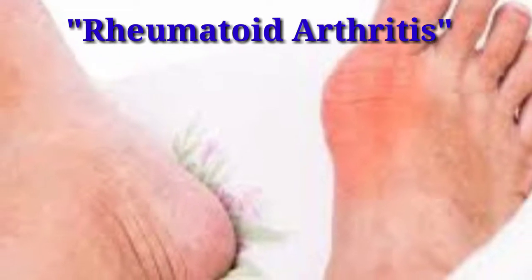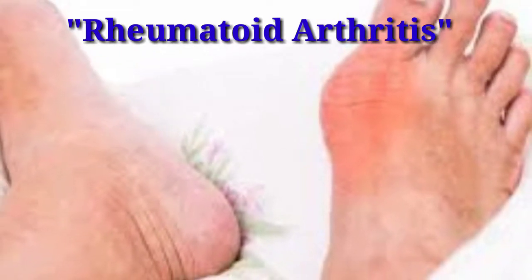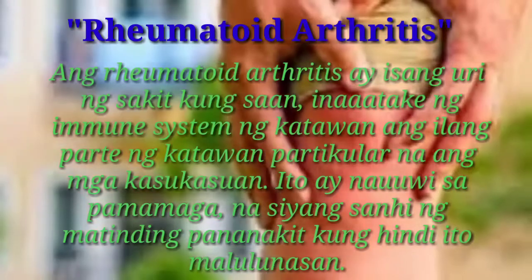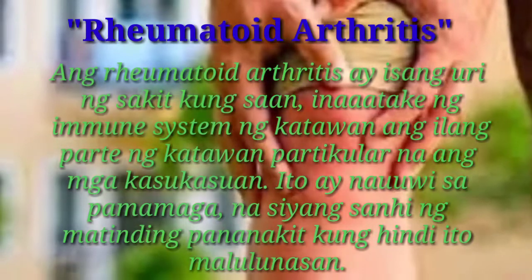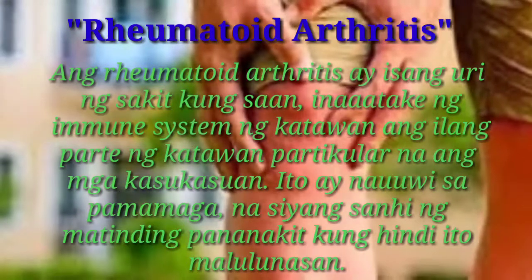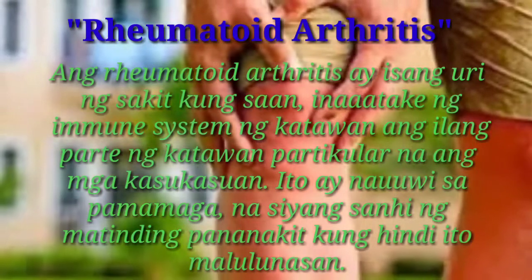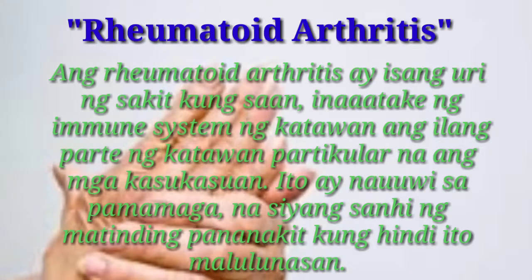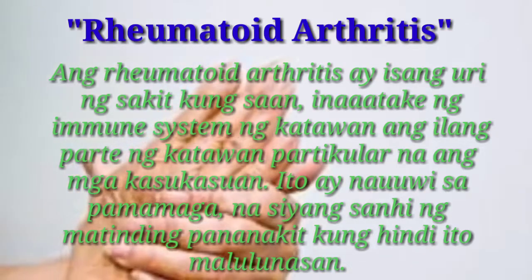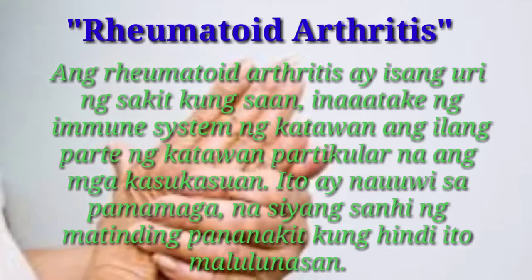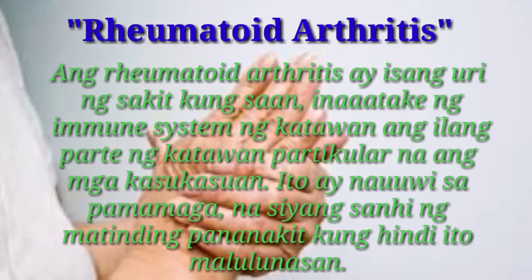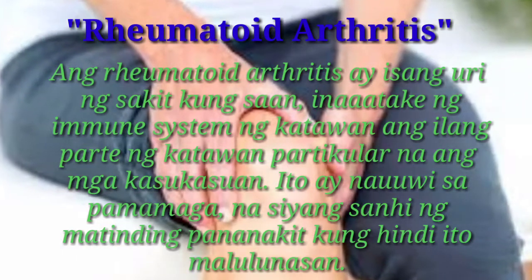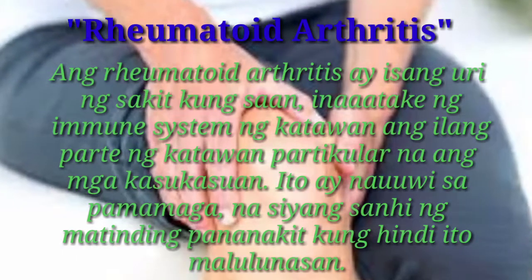Rheumatoid arthritis — ang rheumatoid arthritis ay isang uri ng sakit kung saan inaatake ng immune system ang katawan, partikular na ang mga kasukasuan. Ito ay nauuwi sa pamamaga na siyang sanhi ng matinding pananakit kung hindi ito malulunasan.